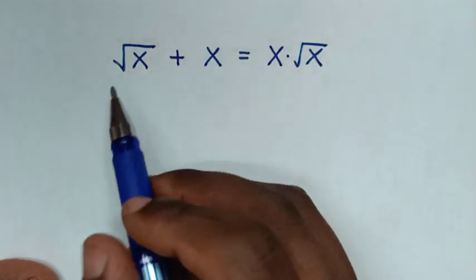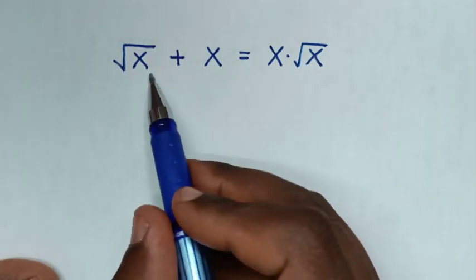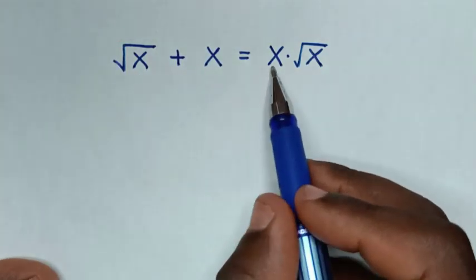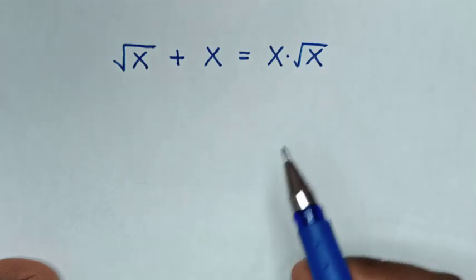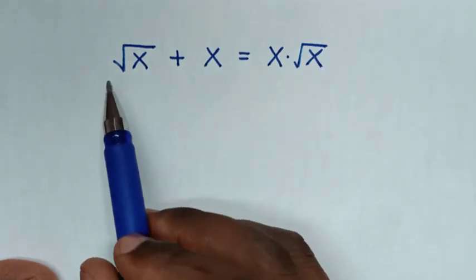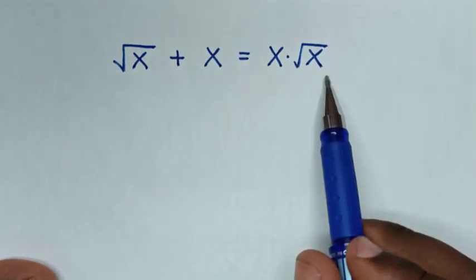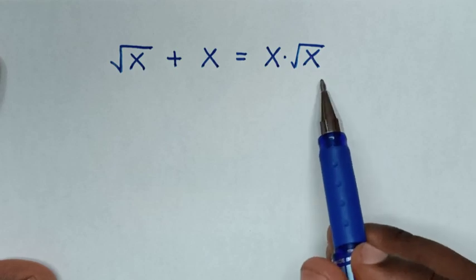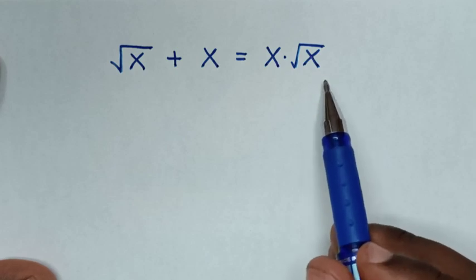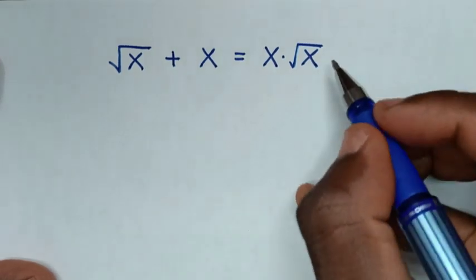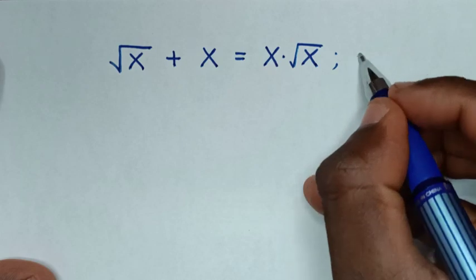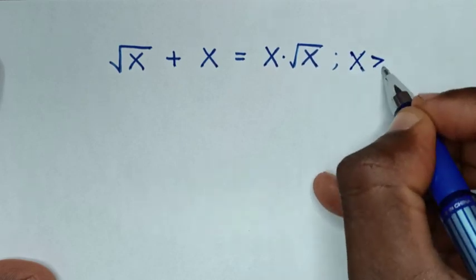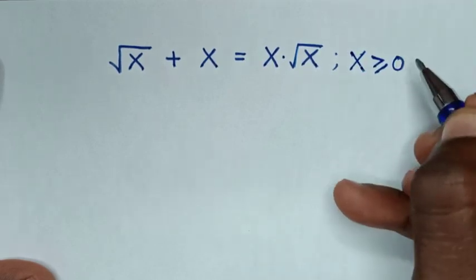Hello. How to solve: square root of x plus x is equal to x times square root of x, to find the value of x from this equation. So first, for the value of x to satisfy the equation, we should know that x should be greater than or equal to 0.